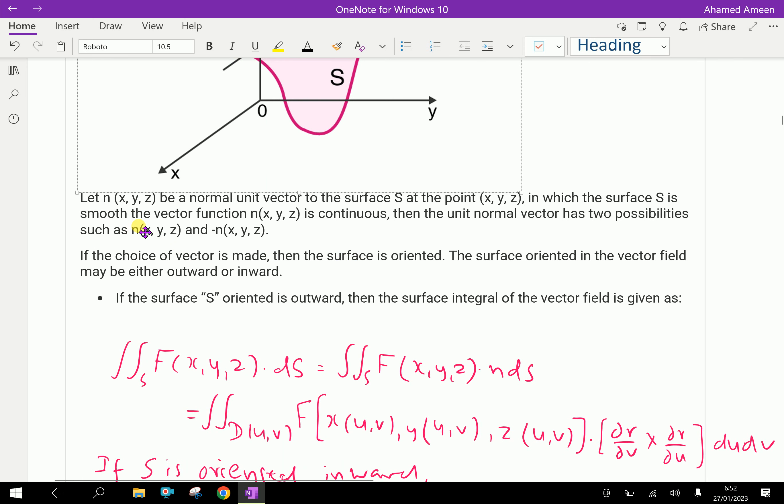Let n(x, y, z) be a normal unit vector to the surface S at the point (x, y, z). If the surface S is smooth, the vector function n(x, y, z) is continuous. Then the unit normal vector has two possibilities: such as n(x, y, z) and minus n(x, y, z). If the choice of vector is made, then the surface is oriented.